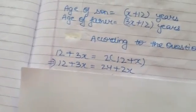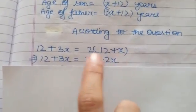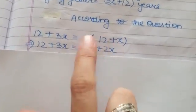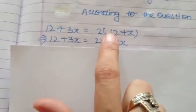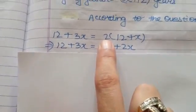Distributive law. So, 2 multiplied by 12 plus X is 2 into 12 plus 2 into X. You have to multiply both these terms by 2. So this is called distributive law.